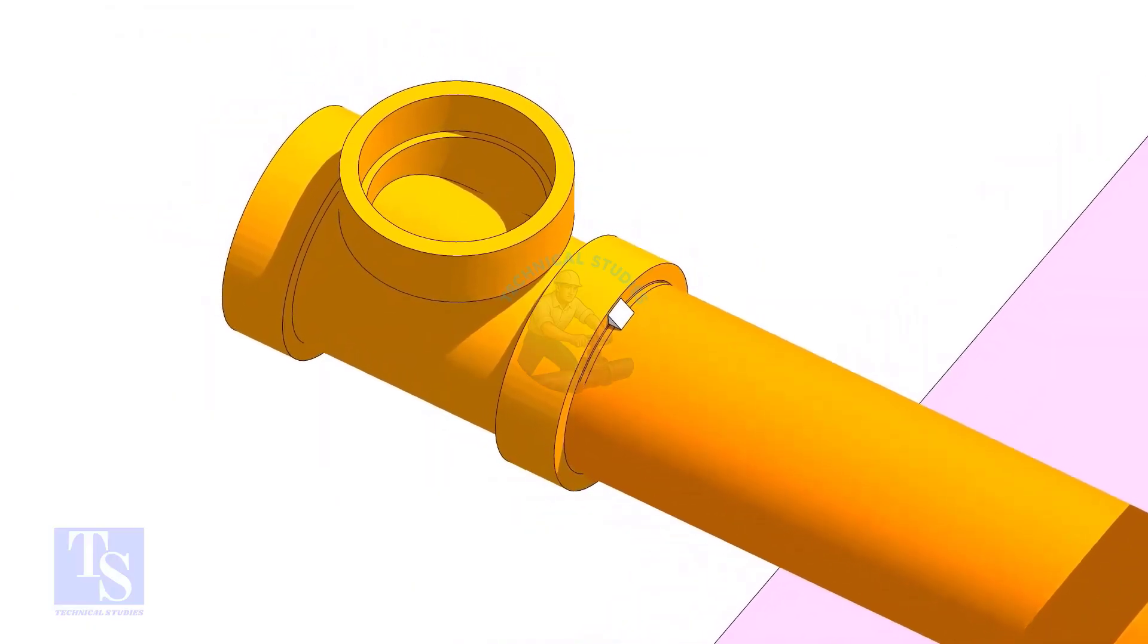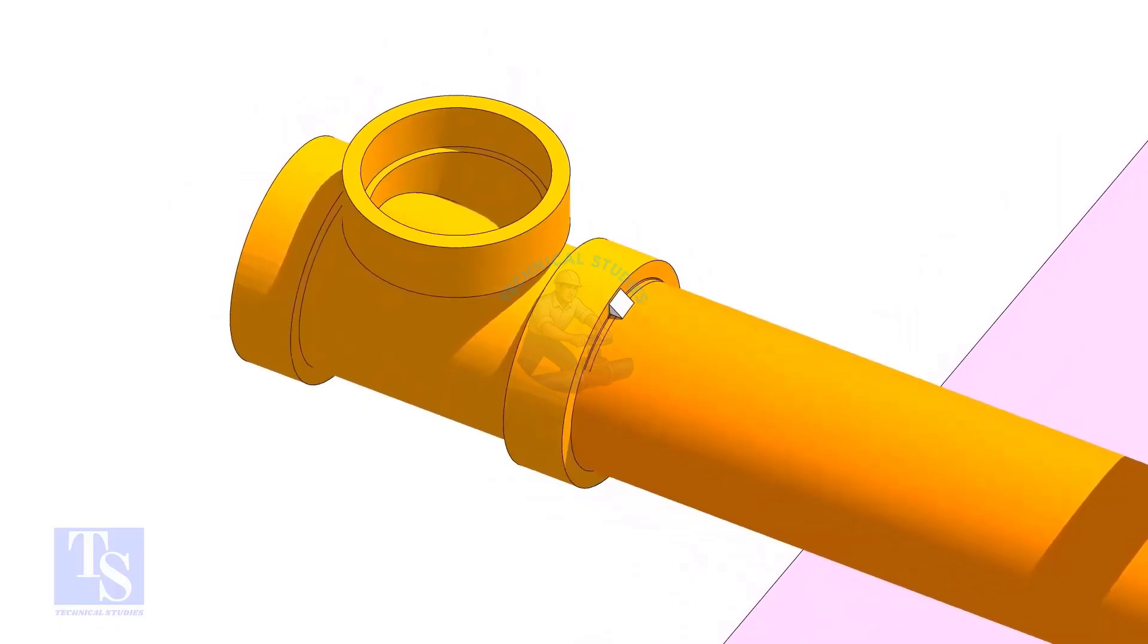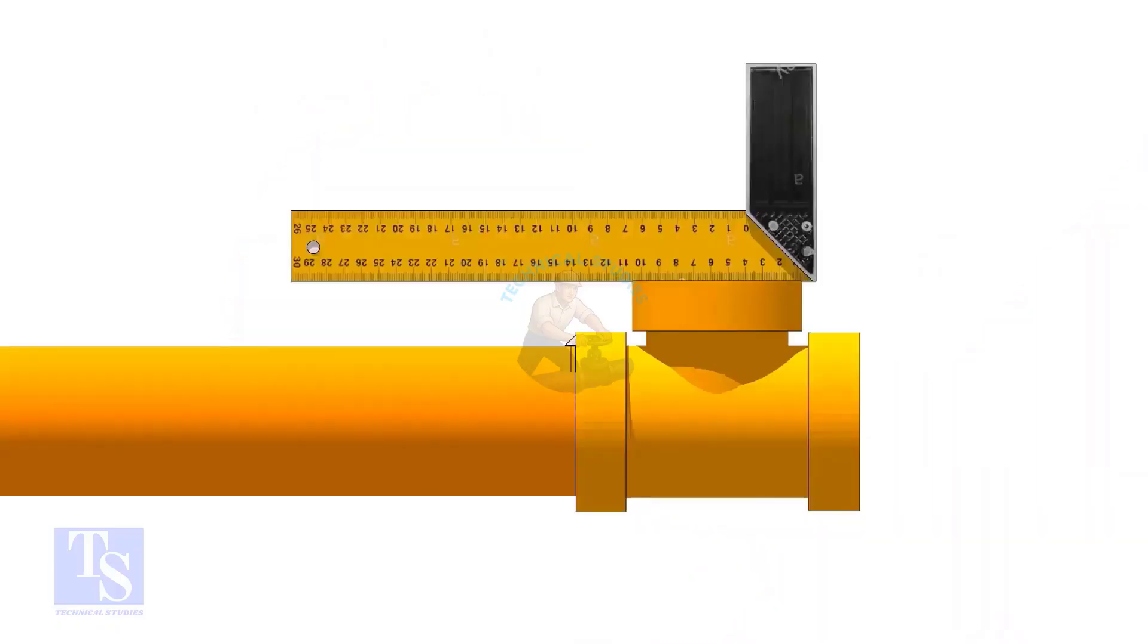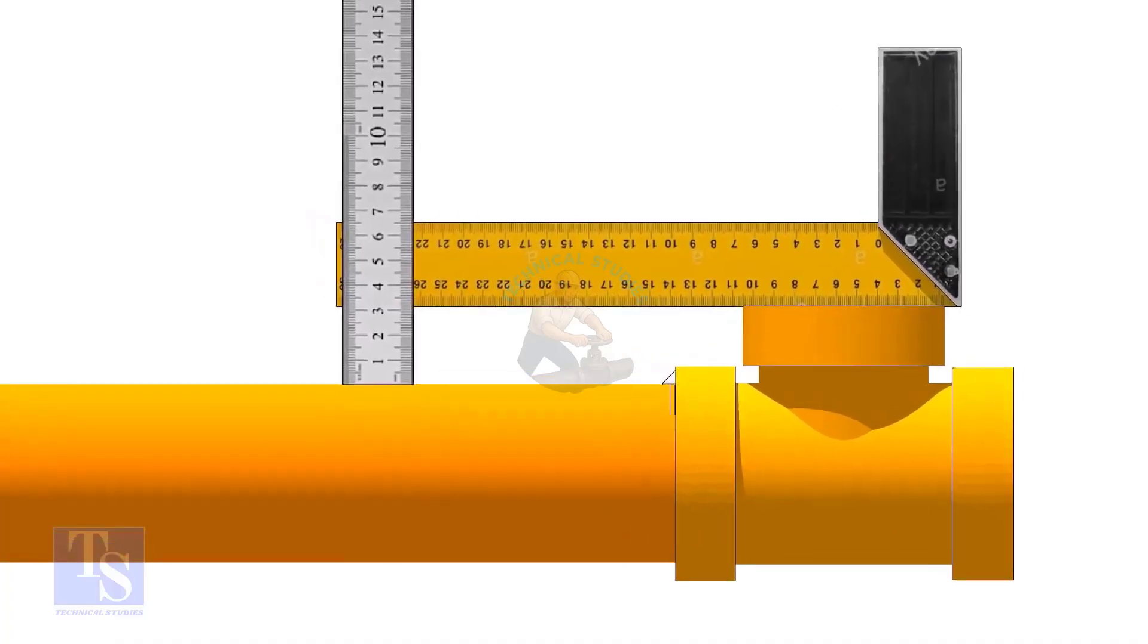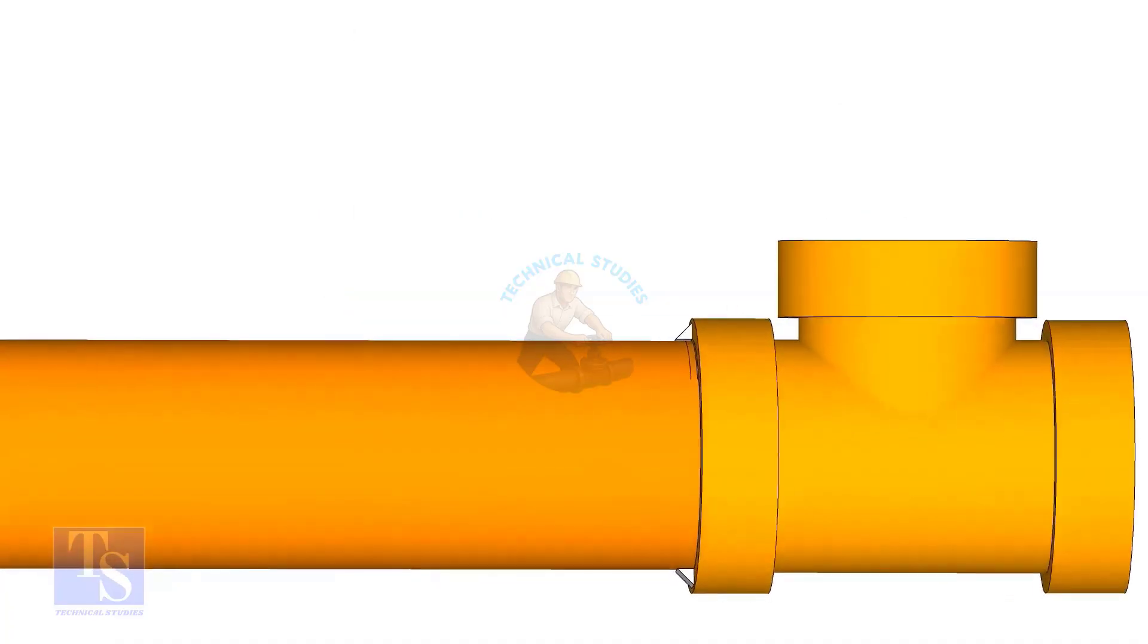Put the tee on the second line and make a small tack weld on the top side as shown. Now move the tee and tack weld at the bottom side.